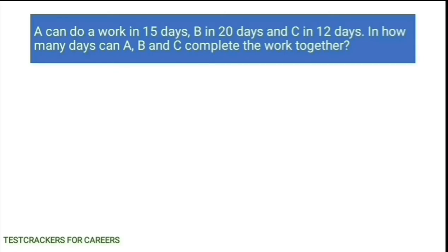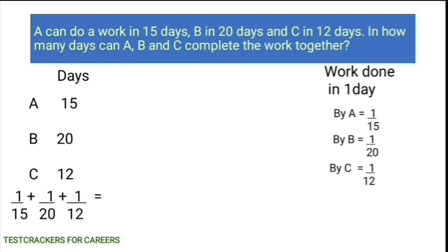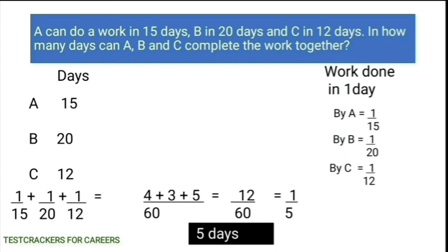A can do a work in 15 days, B in 20 days and C in 12 days. We have to find out in how many days A, B and C can complete the work together. The work done in 1 day by A is 1 by 15, by B is 1 by 20 and C is 1 by 12. The work done in 1 day by A, B and C together is 1 by 15 plus 1 by 20 plus 1 by 12, which is equal to 1 by 5. The inverse of 1 by 5 is 5, so A, B and C take 5 days to complete the work.